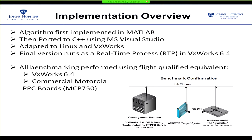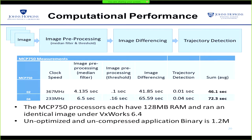This algorithm was first implemented in MATLAB, then ported to C++ using Microsoft Visual Studio. It was then adapted to Linux and VXWorks by APL. Benchmarking was done using a flight-qualified equivalent VXWorks 6.4 on an MPP 750 processor. Here are the performance results on MPP 750: it takes about 50 seconds to process one image sequence. The MPP 750 processor has 128 MB RAM and a clock speed of about 233 MHz, which is much less processing power than a laptop. This shows that our pipeline can fit in a flight-like environment.